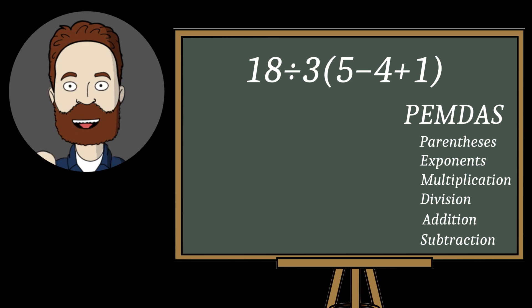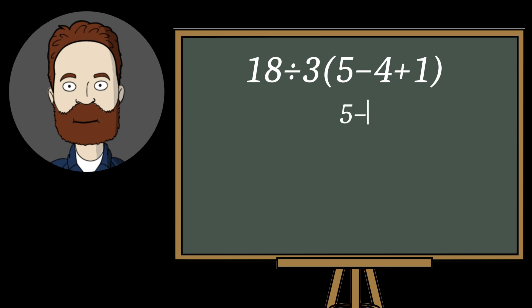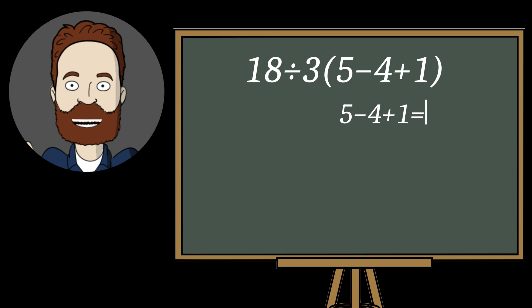So, following the rule, let's start here. First, inside the parentheses, 5 minus 4 plus 1 equals 2.